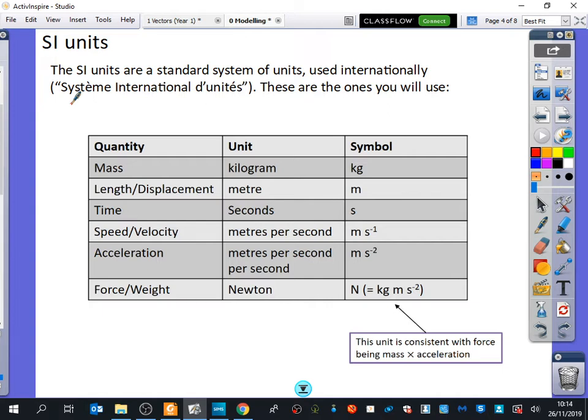So when we're talking about mass, you must use kilograms. You cannot use grams. If you get given something in grams, you have to convert it to kilograms. Length or displacement, anything will always be in metres, not centimetres. Time will always be in seconds, not hours or minutes. Speed and velocity will always be in metres per second. And you'll see here that when we do metres per second, we write metres s to the minus one, because to the minus one means over s. So it's metres per second. For acceleration, it is metres per second per second.